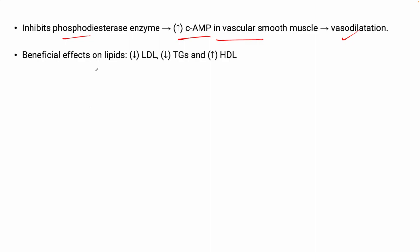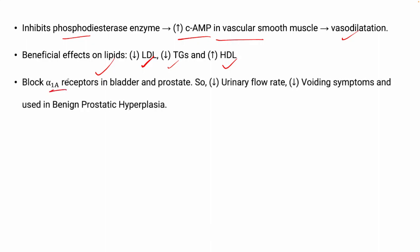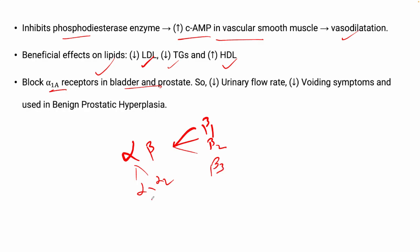Prazosin has beneficial effects on lipids: it decreases LDL (low-density lipoprotein), decreases triglycerides, and increases HDL (high-density lipoprotein). It also blocks the alpha-1a receptors in the bladder and prostate. Alpha-1 receptors are further divided into three subtypes: alpha-1a, alpha-1b, and alpha-1d, which help in neurotransmission.